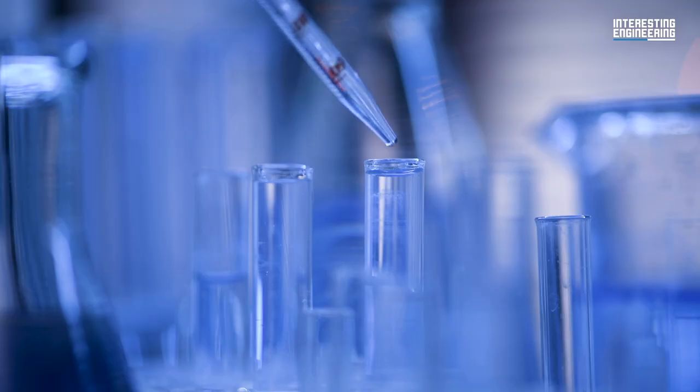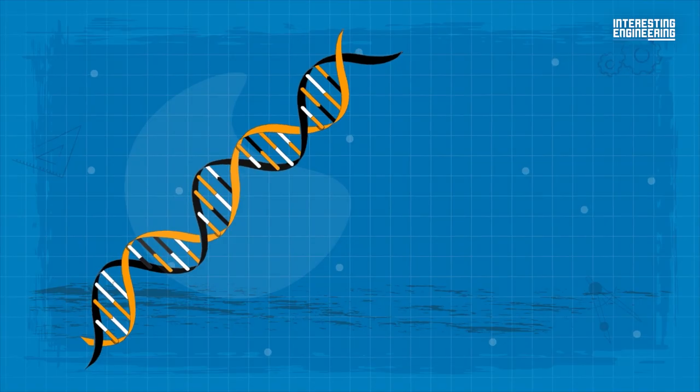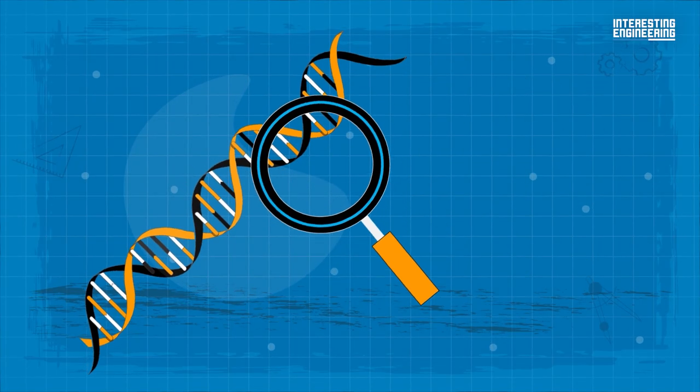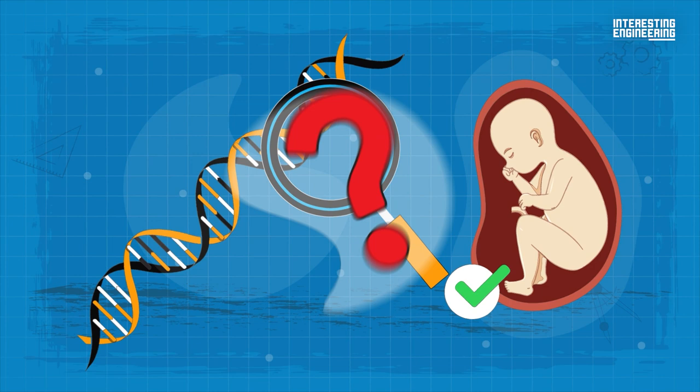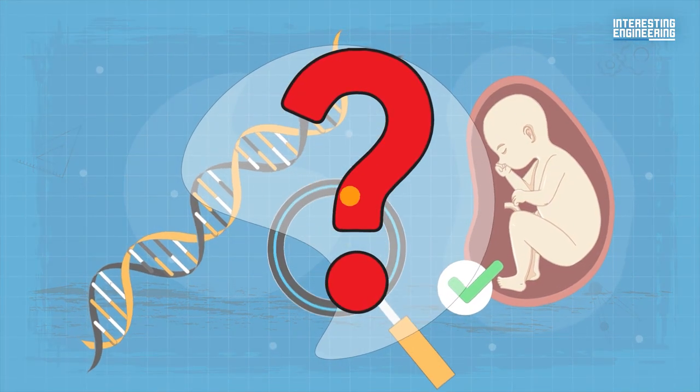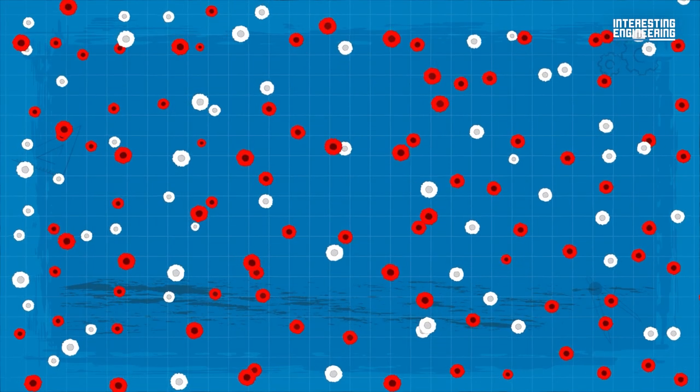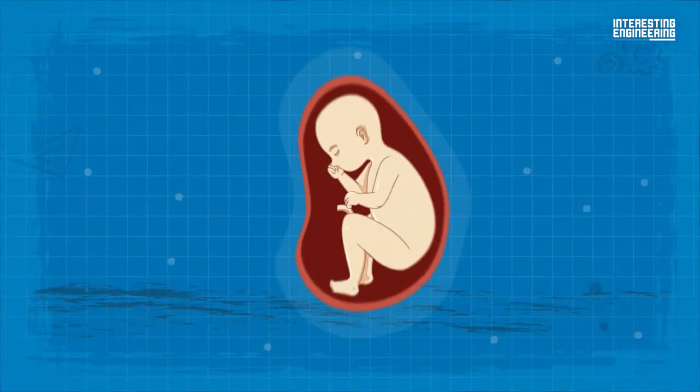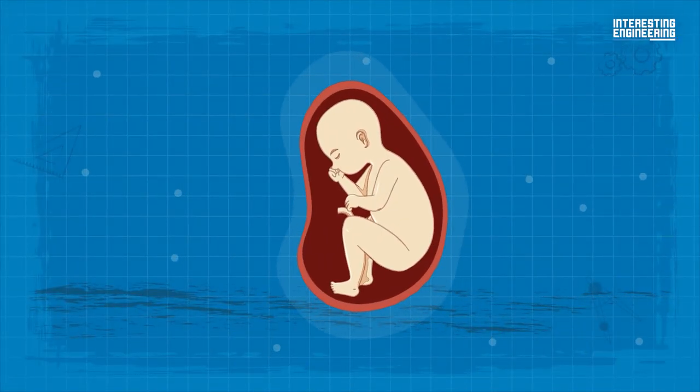Human gene editing in zygotes would be more effective than in adults. To be effective, gene editing must be performed in embryos. Why? You have a large number of cells—billions. Embryos have few cells, especially in their early stages.